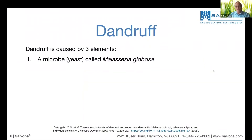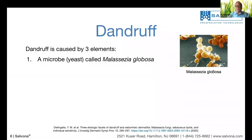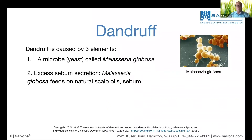In order to have dandruff you have to have three conditions — not just one. First, we need the microbe: the yeast Malassezia globosa. The existence of this yeast is critical to get dandruff. Even if you don't see it, if you see dandruff, you know there is yeast activity. Number two is excess sebum — the yeast feasts on the sebum. You can see excess of sebum by having wet or oily hair.